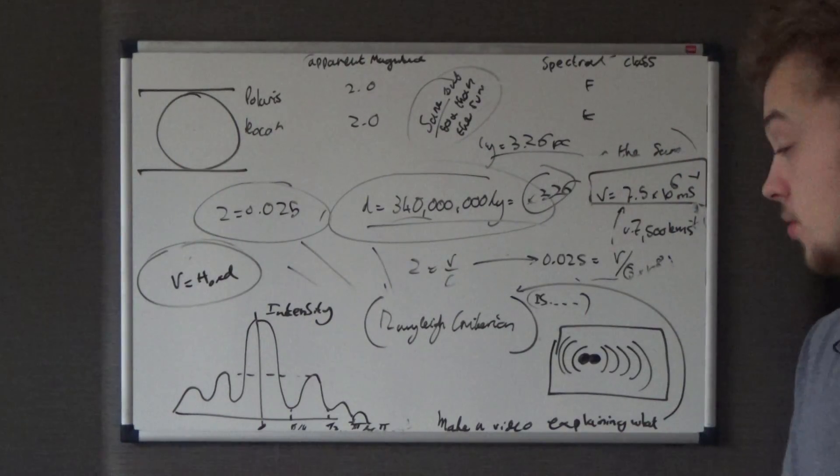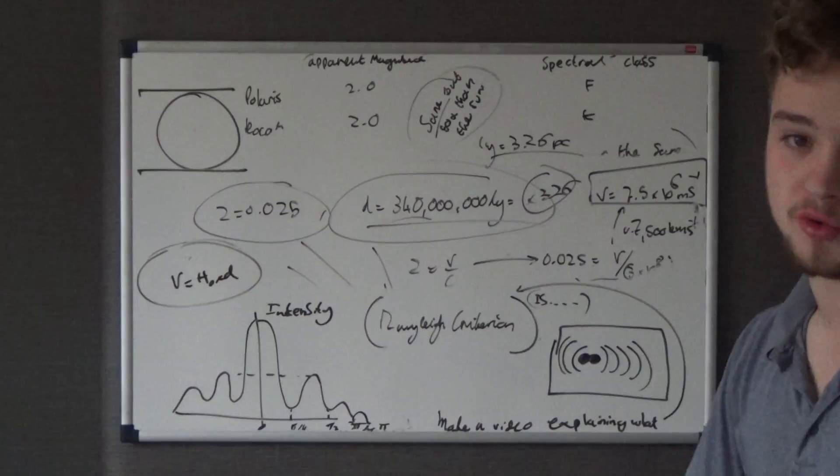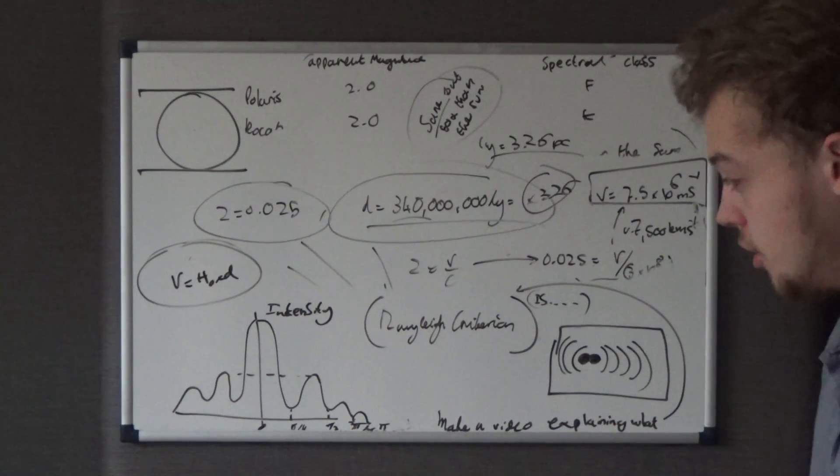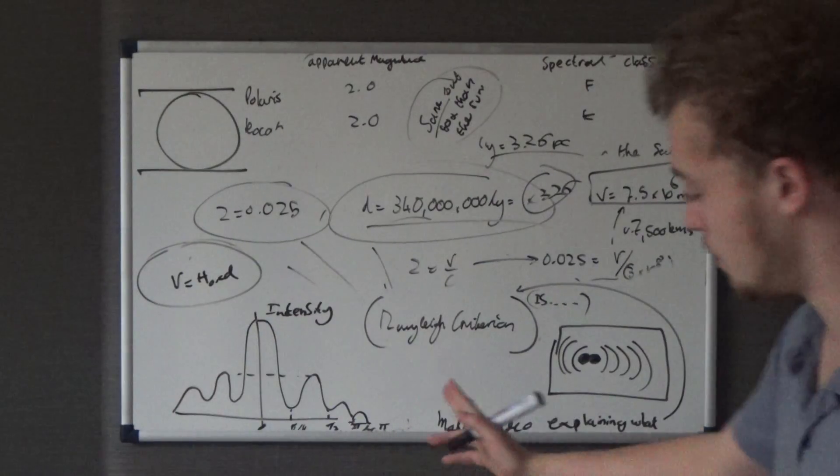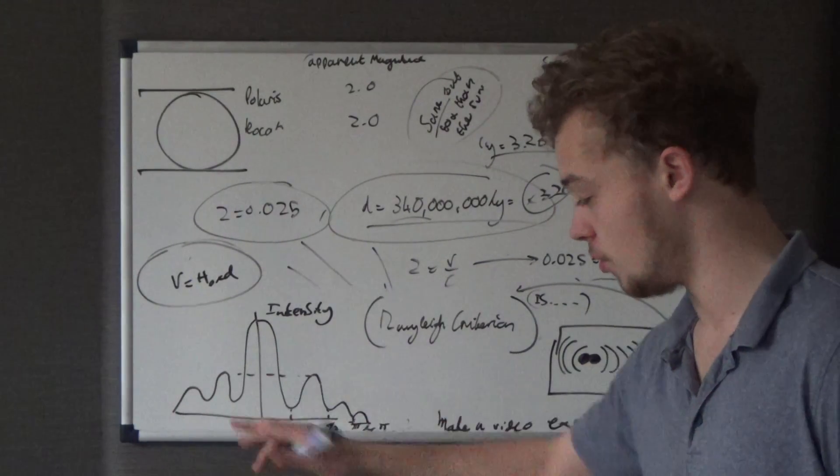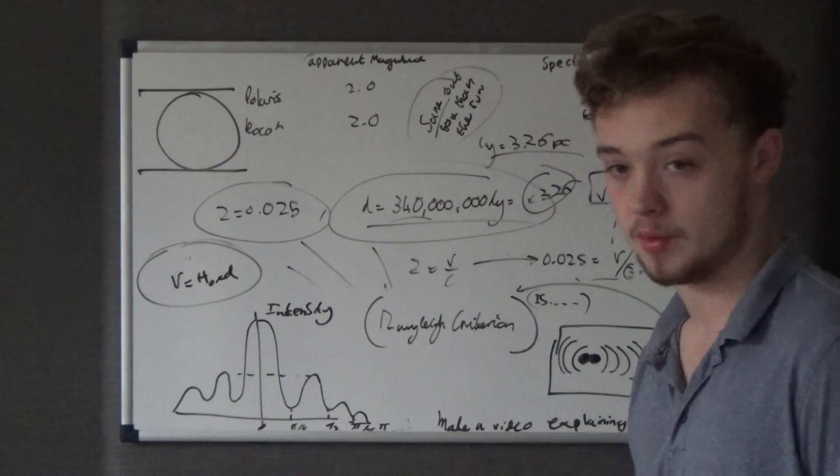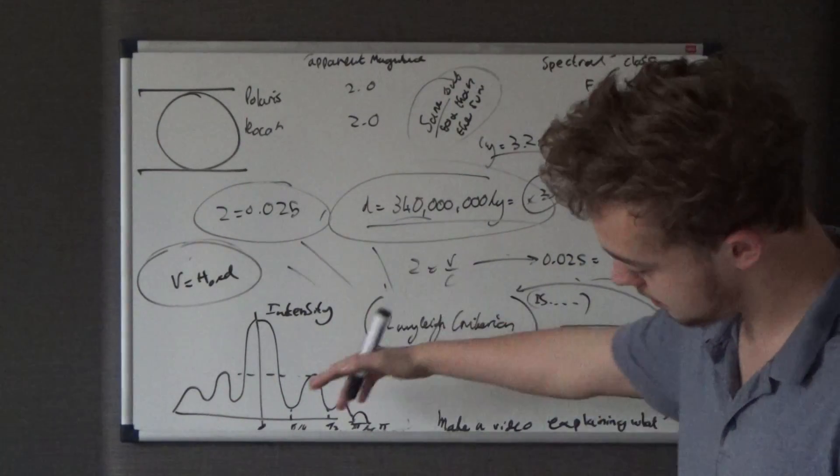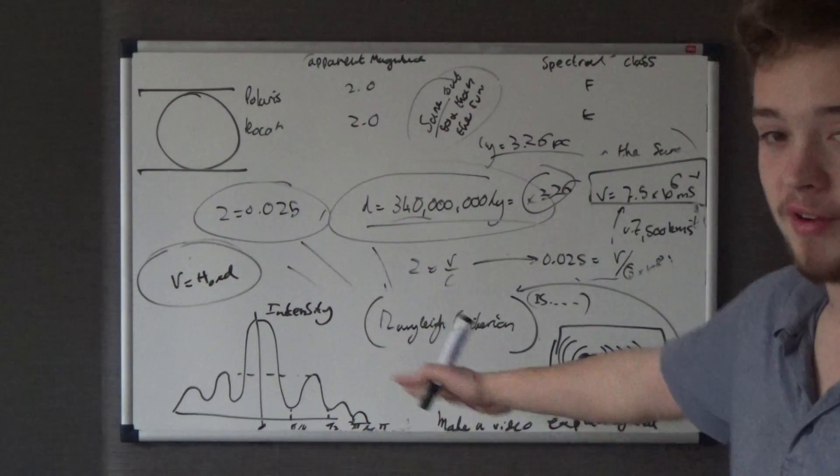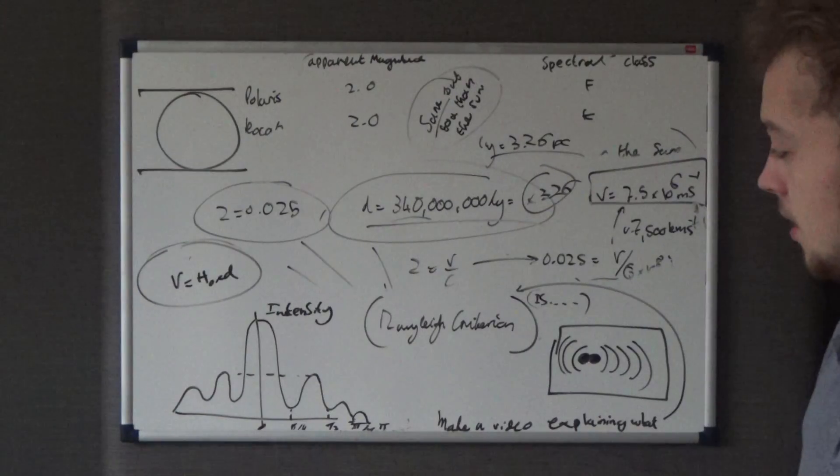We're talking about peaks and troughs because it's talking about this graph here, weirdly enough what I've drawn, and it's an intensity graph against angular separation. So we've got pi, three-quarters pi, half pi, quarter pi, zero, and this is a diffraction pattern essentially, so you should be fairly familiar with how this works.